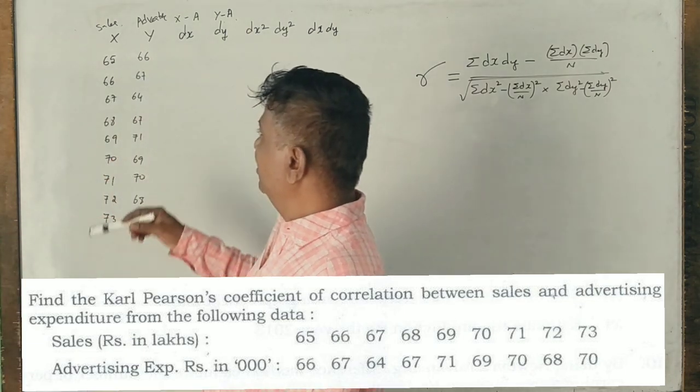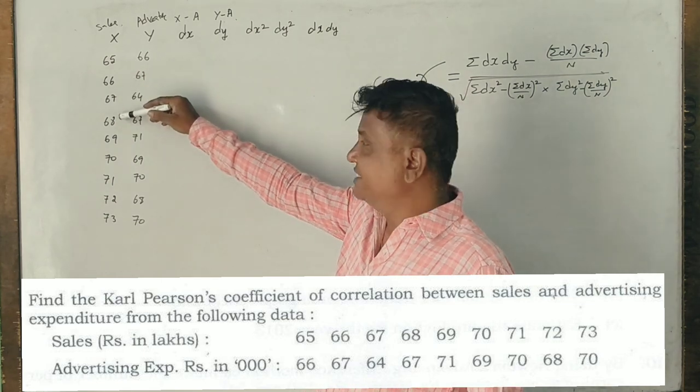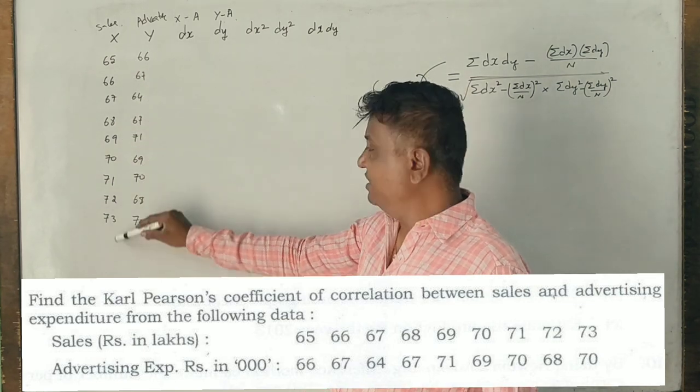The sales are 65, 66, 67, 68, 69, 70, 71 to 73.